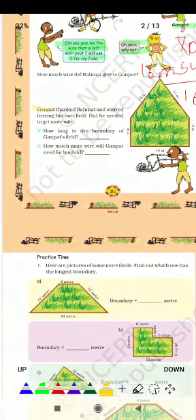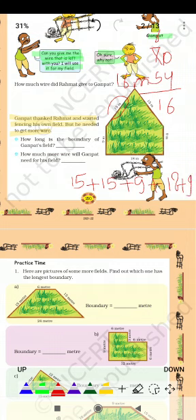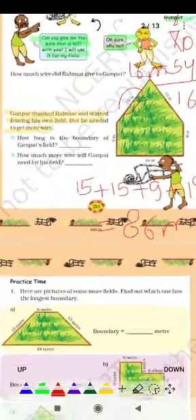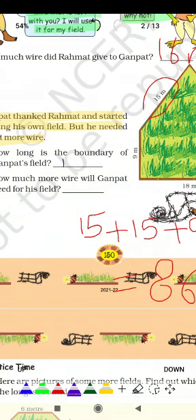गनपत ने रहमत को thank किया और अपने field की fencing शुरू की, लेकिन उसे और wire की जरूरत पड़ी क्योंकि 16 मीटर उसके लिए बहुत कम था। गनपत के खेत में एक तरफ 15 मीटर, दूसरी तरफ भी 15, एक तरफ 9, एक तरफ 18, और एक तरफ 9 है। तो इन सबका total 66 मीटर... How long is the boundary of गनपत's field? गनपत के field की boundary 86 मीटर है।